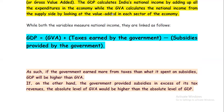For example, if the government earns 20 crore in taxes and provides 10 crore in subsidies, then GDP equals GVA plus 10 crore, so GDP is higher than GVA. On the other hand, if the government provides more in subsidies than it collects in taxes — say taxes are 20 crore and subsidies are 30 crore — then GDP equals GVA minus 10 crore, meaning GVA would be higher than GDP.